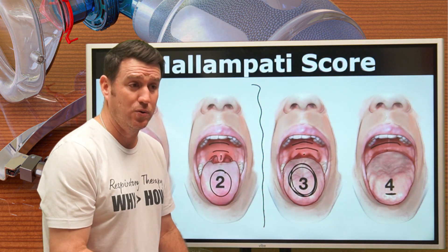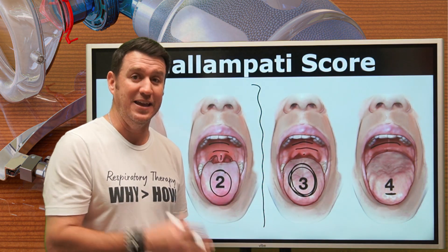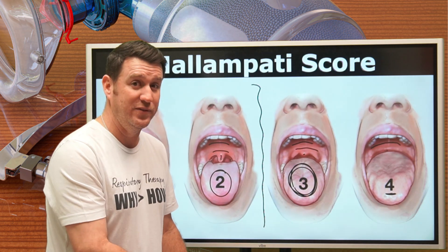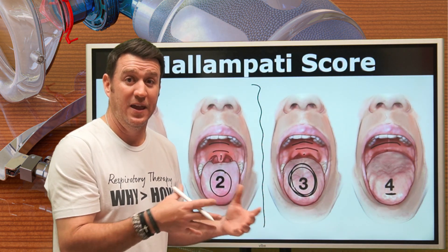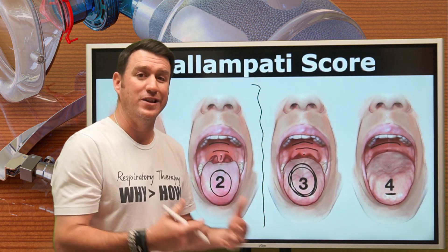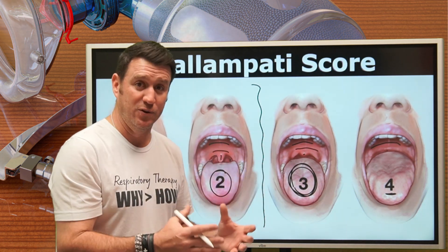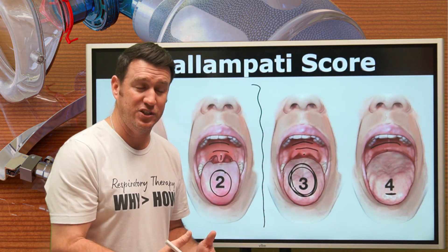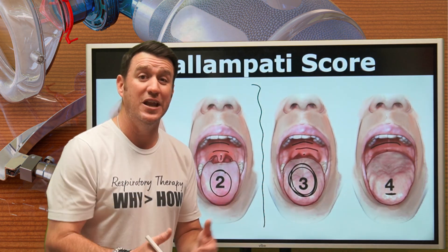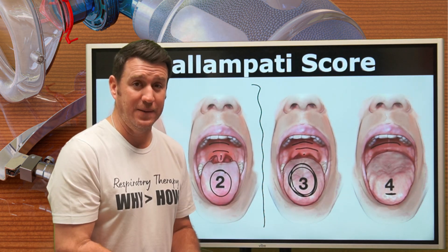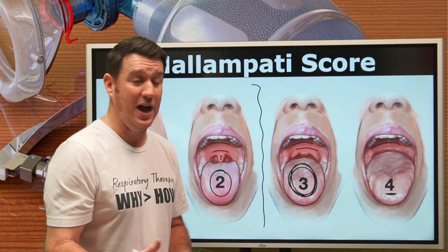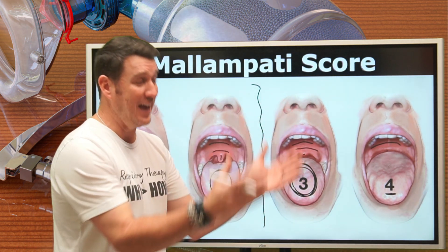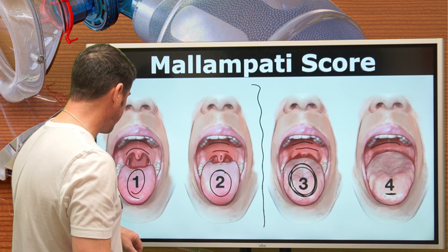The Mallampati score is not a solid independent predictor of a difficult airway. A study from 2023 actually revealed that even with implementation of the Mallampati score, still over 90% of intubations deemed difficult were unanticipated. So even with these precautions, you always have to be on your toes. This is just a tool to help you preemptively prepare yourself — to signal that this might be setting up like a difficult intubation.